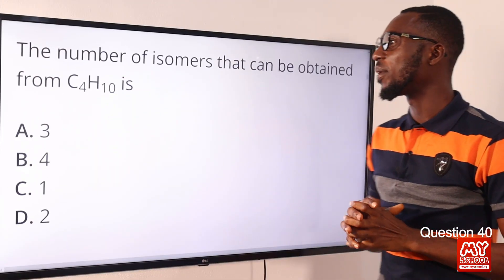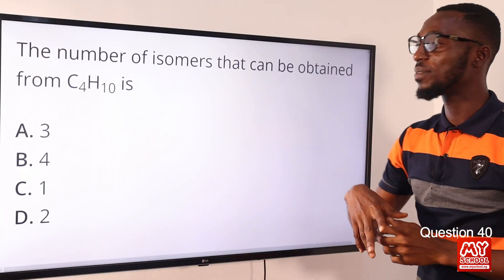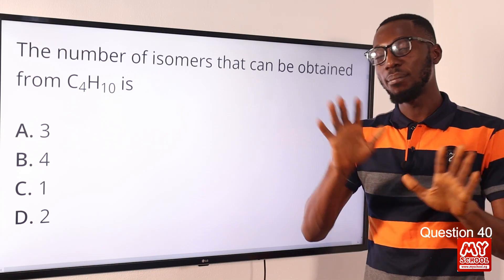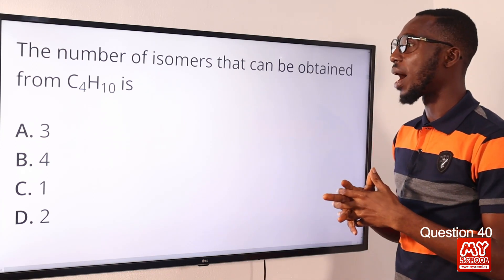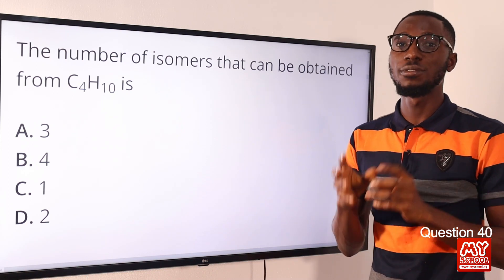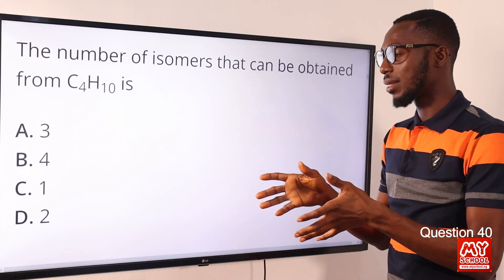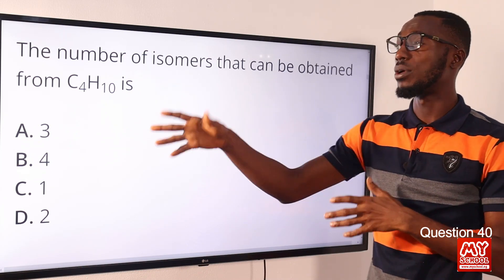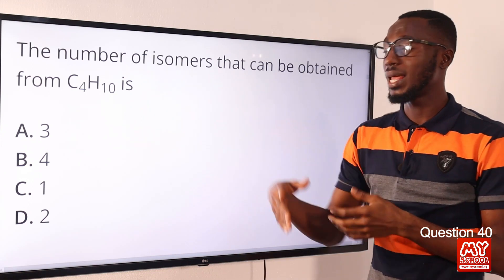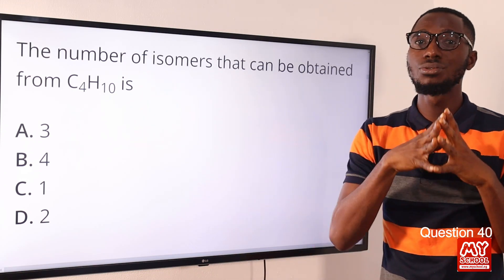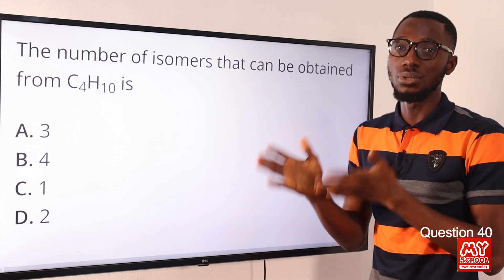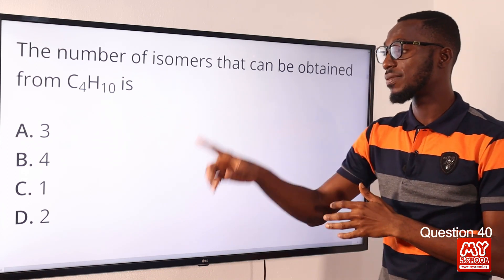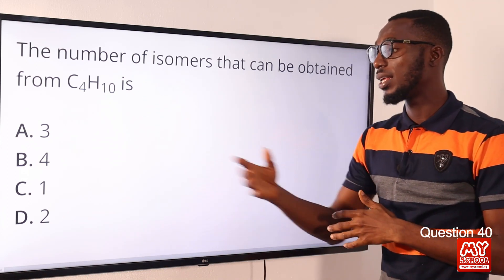Question 40. The number of isomers that can be obtained from butane C4H10 is what? Isomers are compounds that have the same molecular formula but different structural formula. For alkanes to exhibit isomerism, there must be at least four or more carbon atoms. The structural isomers of butane are two: normal butane and 2-methylpropane. So there are two isomers for butane. That is found in option D. Option D is the correct option.